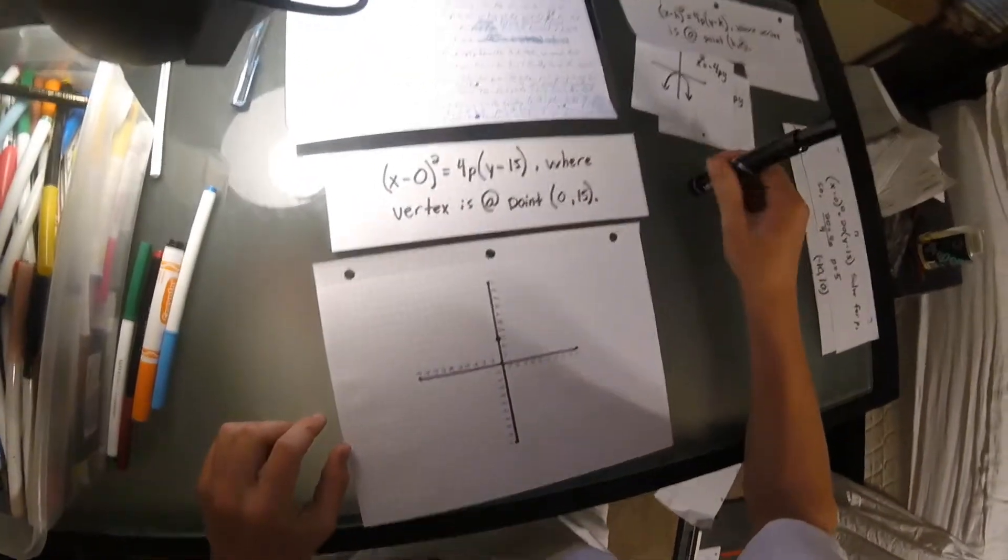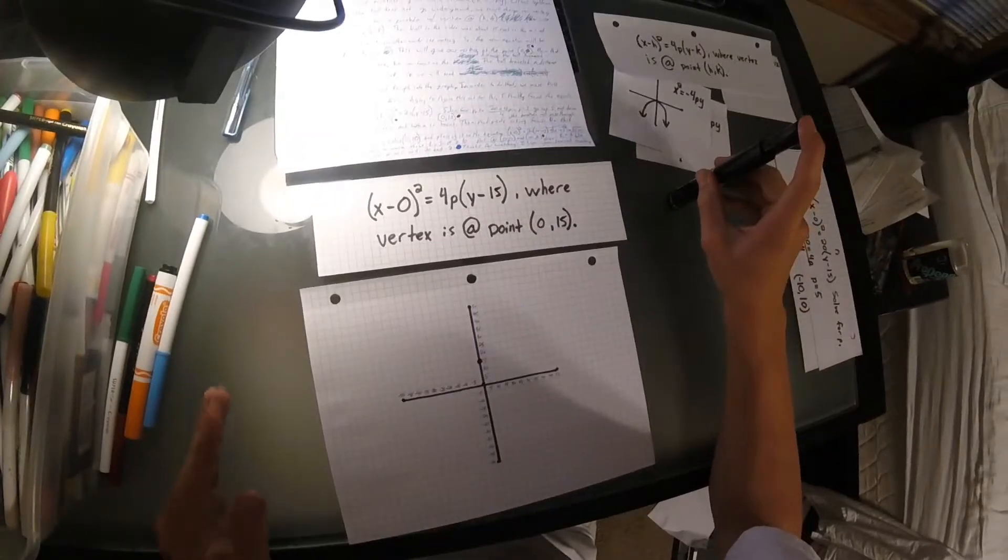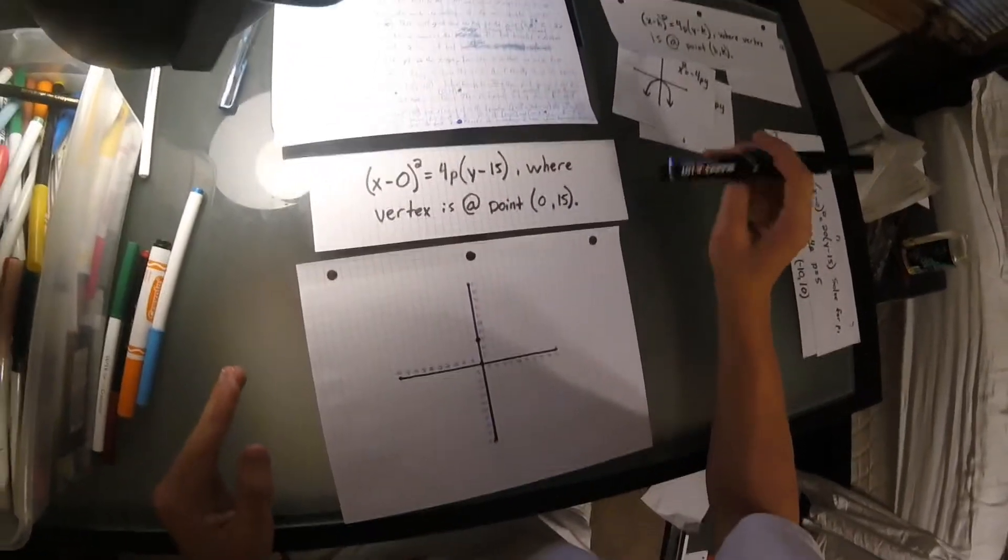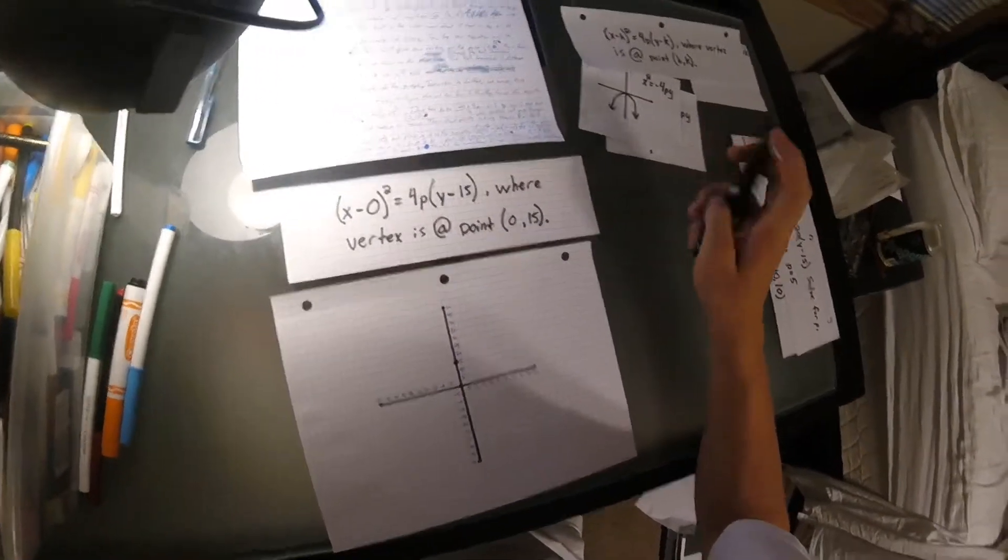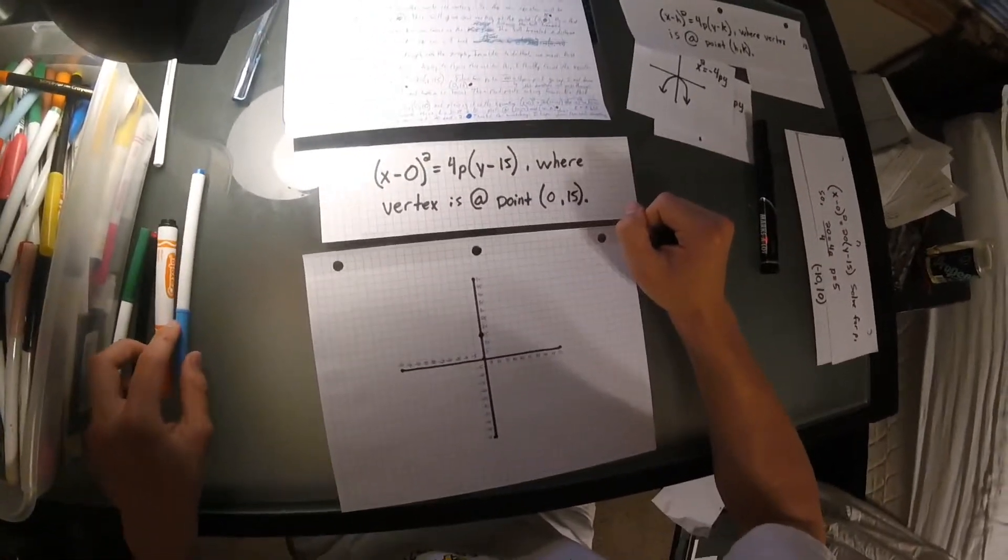Now that we have our vertex, we can focus on the distance the ball traveled, which was about 40 feet. So, we need to incorporate that into the graph. In order to do that, we must first find our focus.